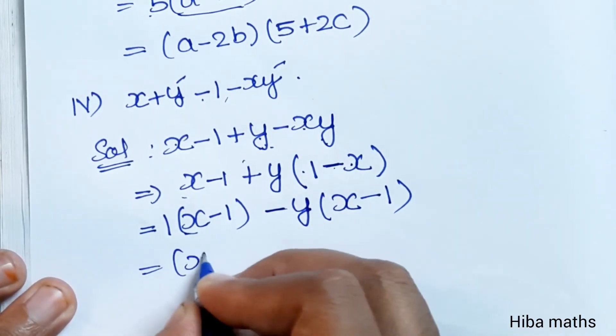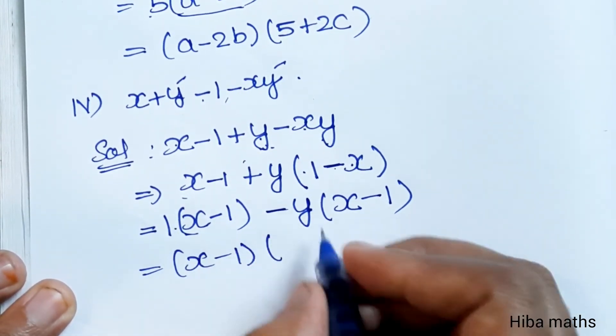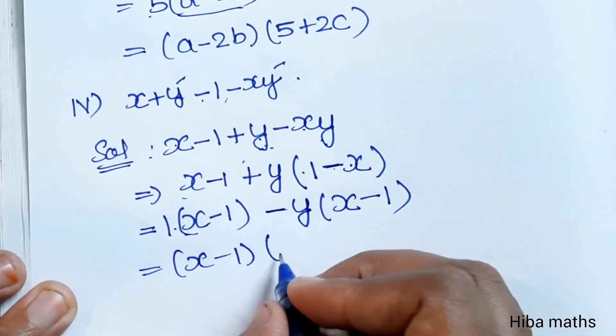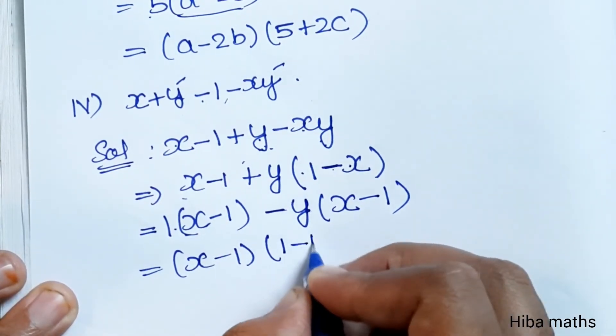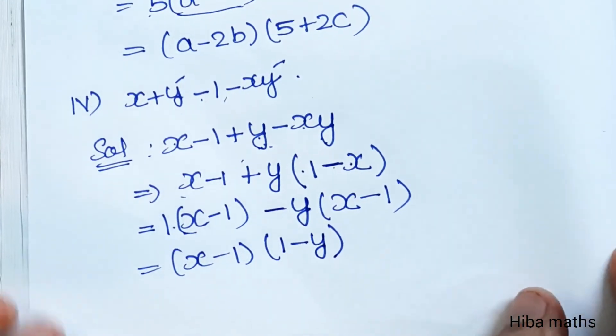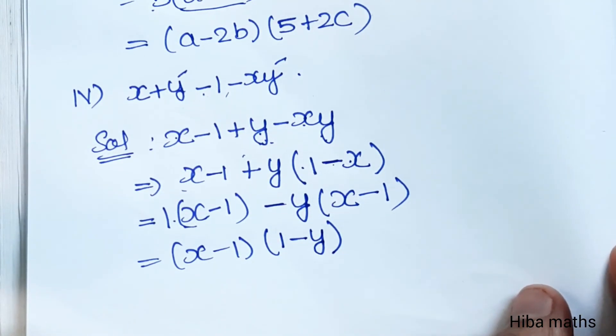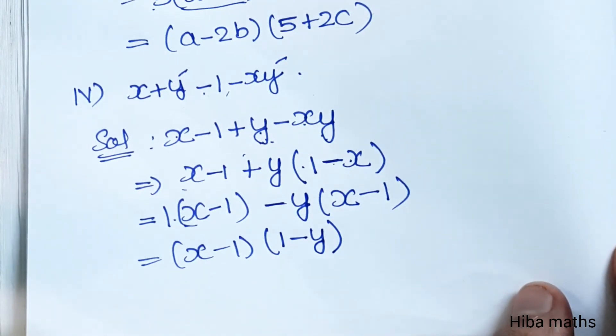So the two terms become bracket x minus 1, and the other term is bracket 1 minus y. The factored form is bracket x minus 1 into bracket 1 minus y. Thank you so much for watching.